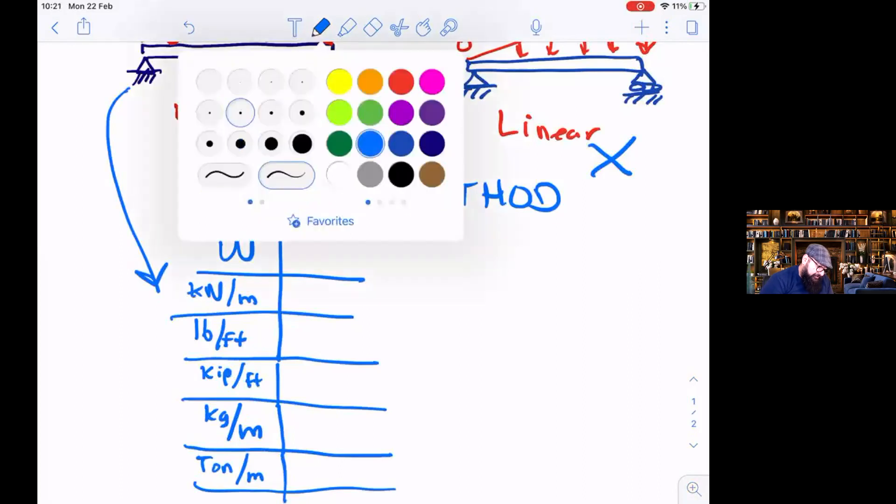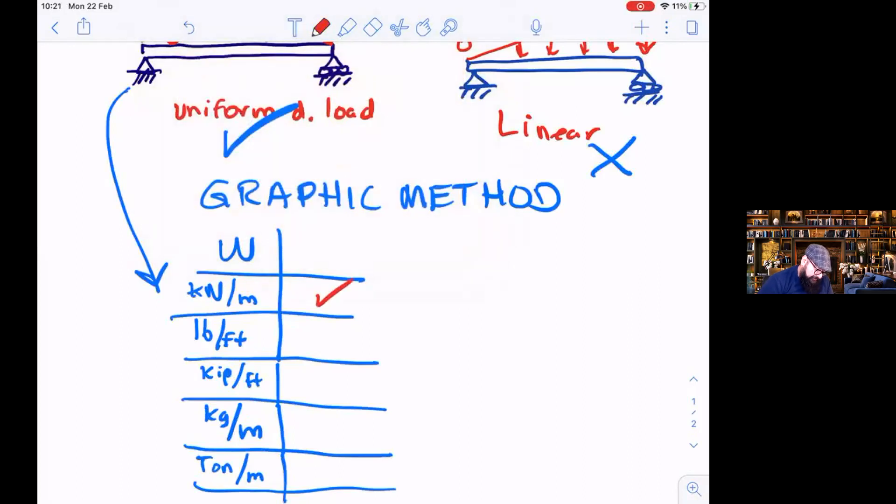What are we going to do today? We are going to use this one. But this order, this is the imperial system. Imperial system. This is the MKS.